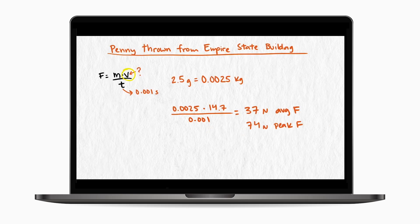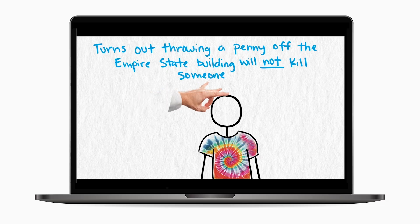You've probably heard that throwing a penny off the Empire State Building could kill someone below. If you've watched Mythbusters or a few other videos on YouTube, spoiler, you already know that it isn't true.